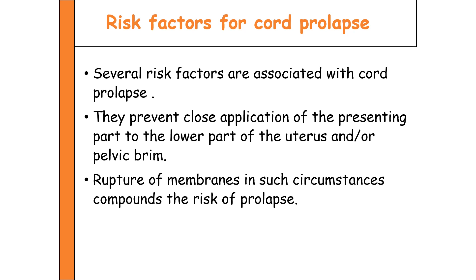The risk factors for cord prolapse include anything that prevents close application of the presenting part to the lower uterus or pelvic brim. A cephalic presentation that is well engaged is a well-fitted presenting part; any other presentation creates space between the presenting part and the maternal pelvis through which the umbilical cord may escape. If, for any reason, the umbilical cord lies alongside or in front of the presenting part and the membranes rupture, that leads to cord prolapse.